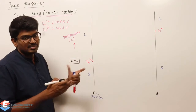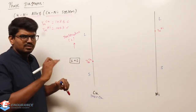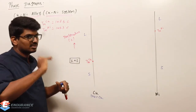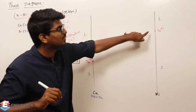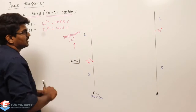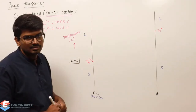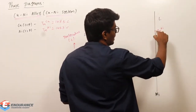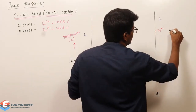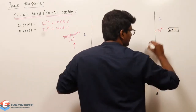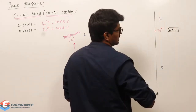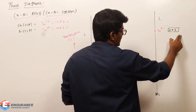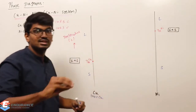Coming to nickel — from 30°C room temperature I am heating it, so temperature is going to increase until it reaches its melting point of 1453°C. In the y-axis I am representing temperature. At melting point, liquid and solid will exist in equilibrium. After that it will change to liquid. But when the phase change is occurring, temperature will never change — that is the key point to understand.